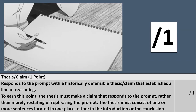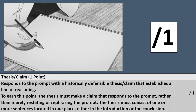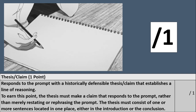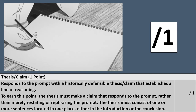Your second scoring point is your thesis and the claim you're going to make — it should be the final thing you put in your introduction. It responds to all parts of the prompt with a historically defensible thesis that establishes a line of reasoning. You can't get this point if you just restate or rephrase the prompt, and I would suggest it needs to be the last thing in your introduction.